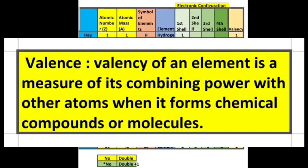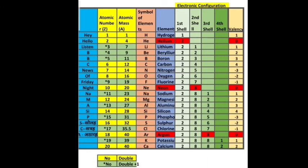Valency of an element is a measure of its combining power with other atoms when it forms chemical compounds or molecules. For metals, valency equals the number of electrons in the outermost shell. For example, the outermost shell of lithium has one electron, so its valency is 1.